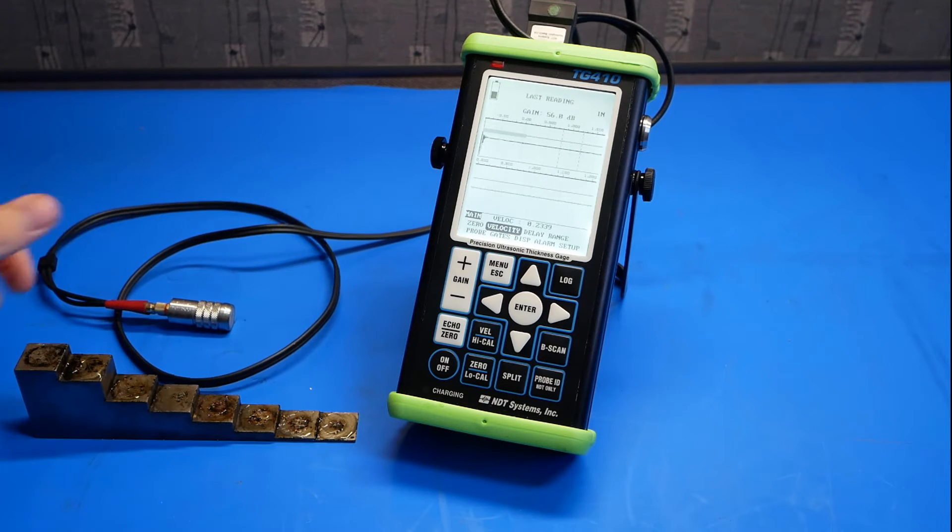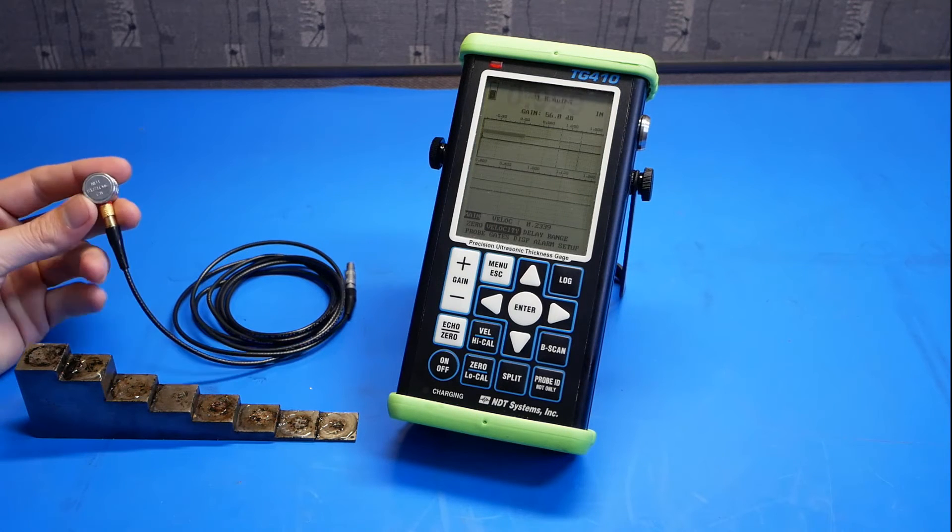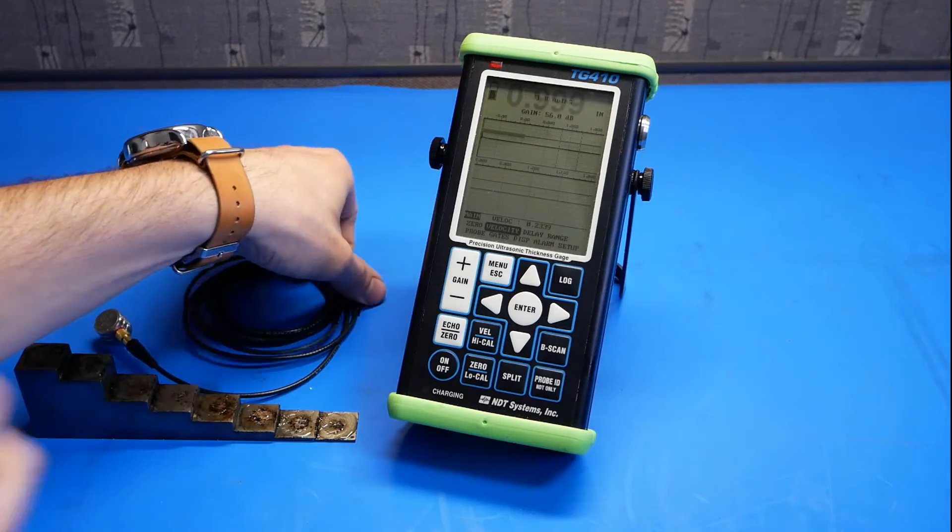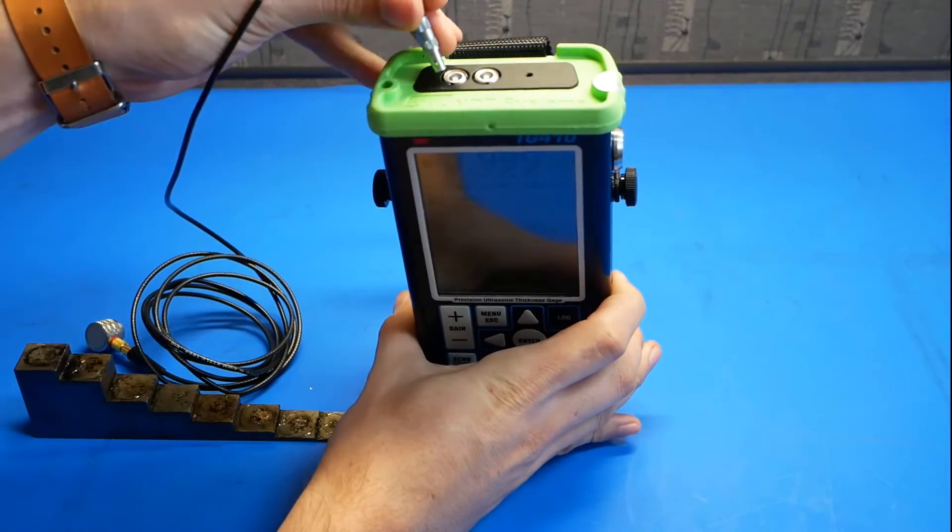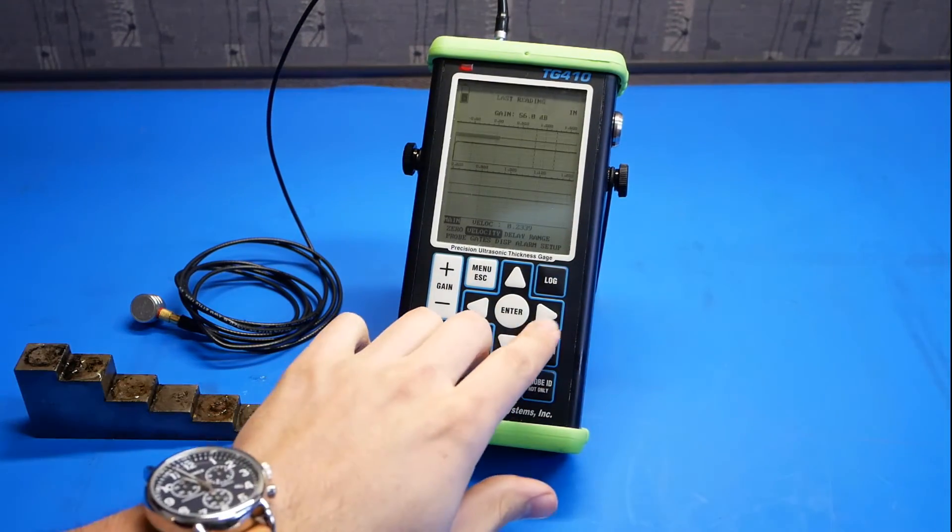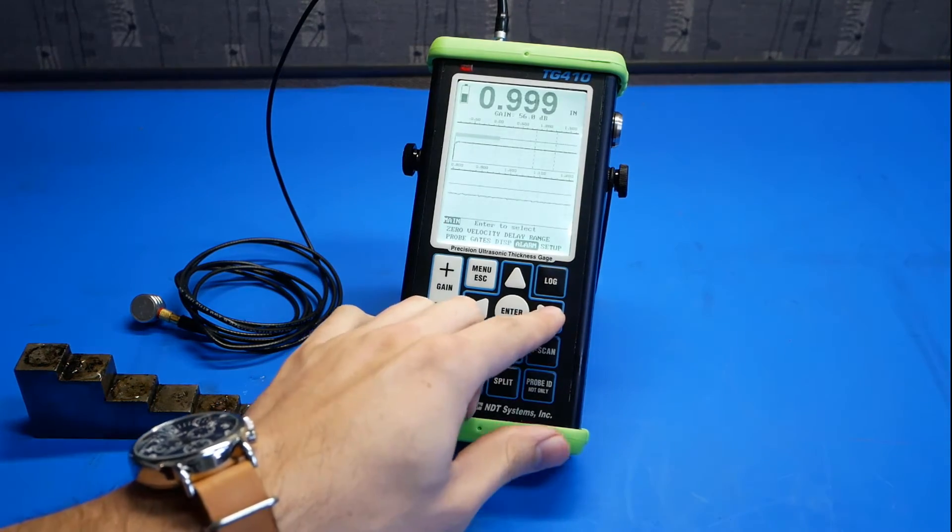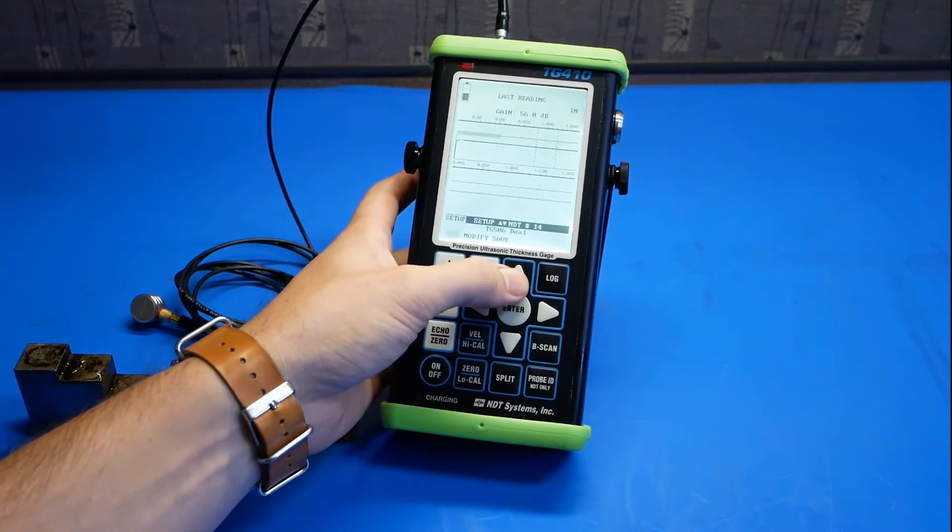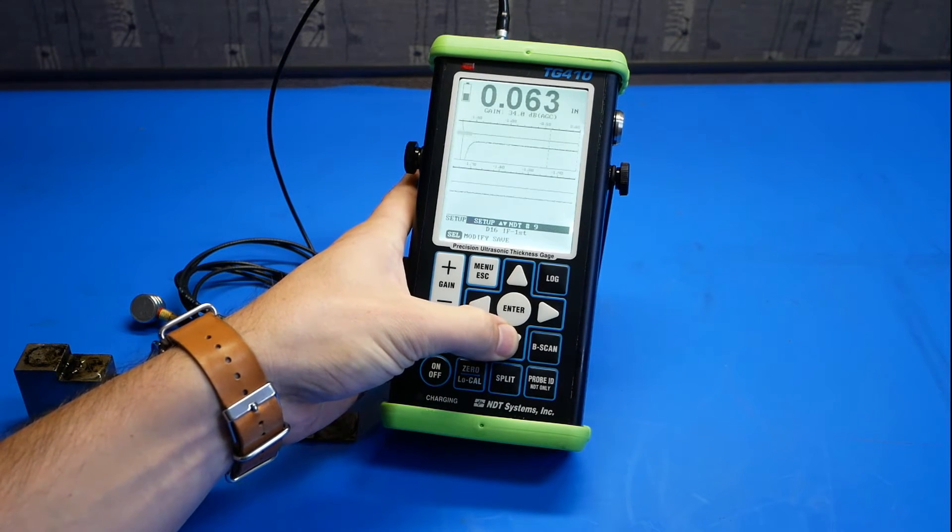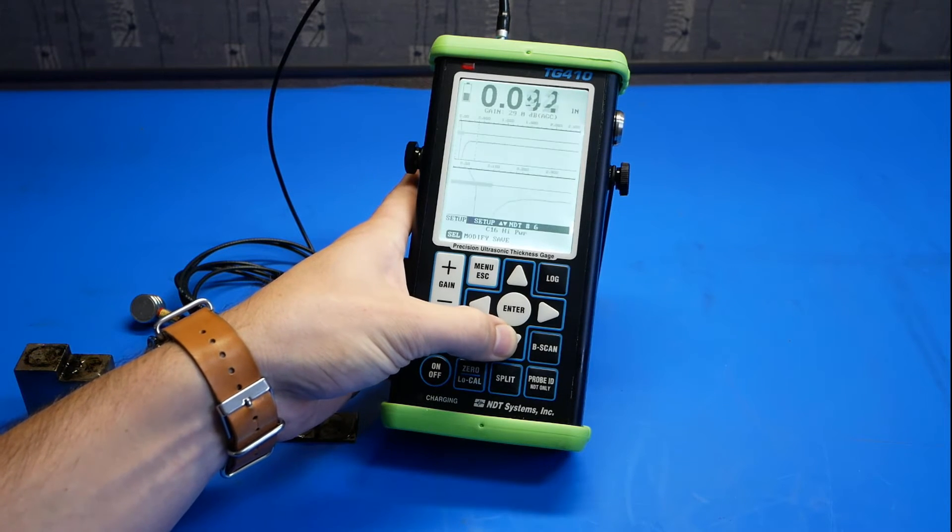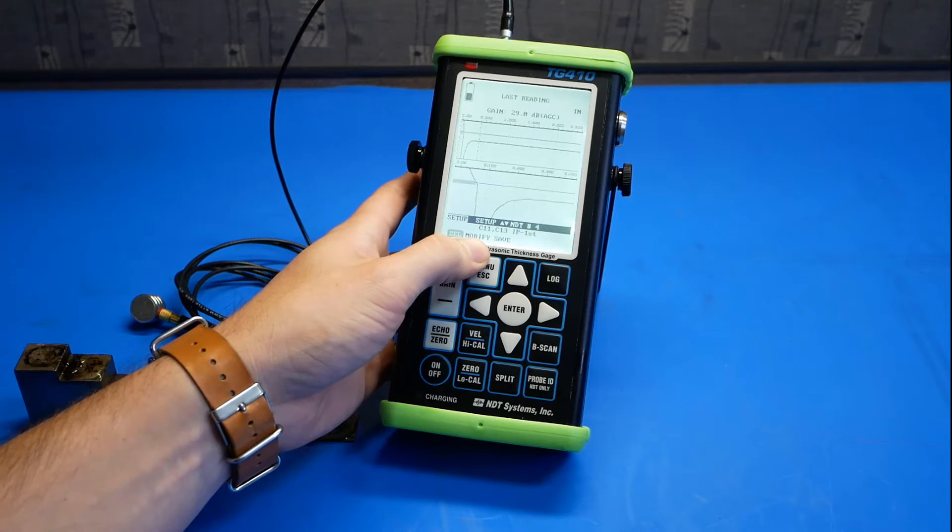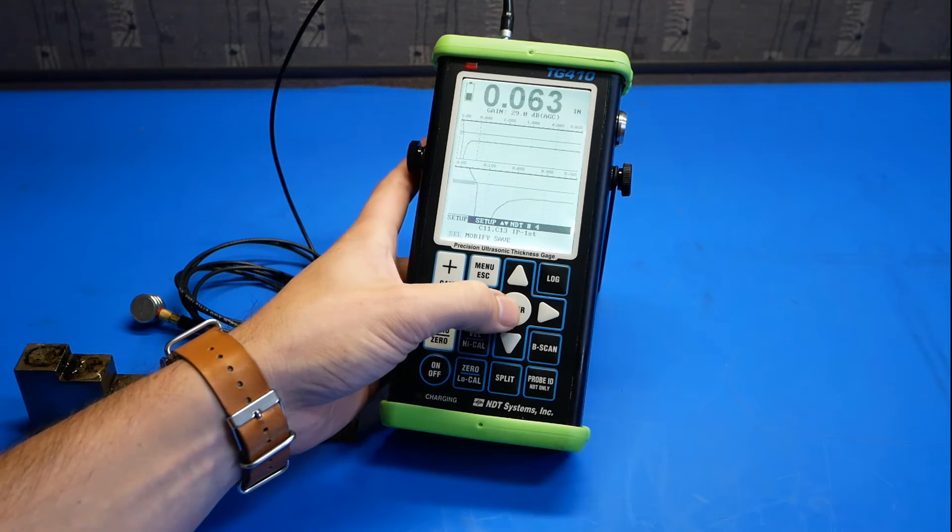Let's move on to the single element contact. Here we have a C11 contact transducer, also 5 MHz. We're going to plug it into the gauge to the leftmost socket. And then again, we'll go into the setup and look for the file. Once you've found the C11, C13 file, go ahead and hit select.